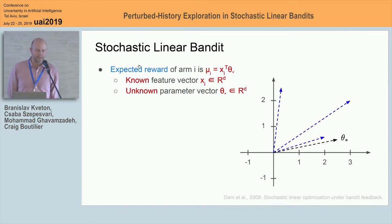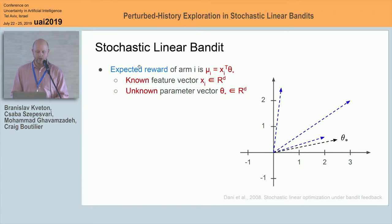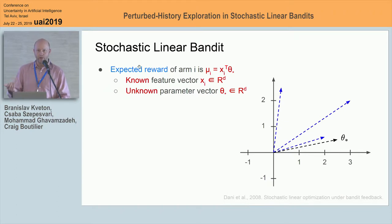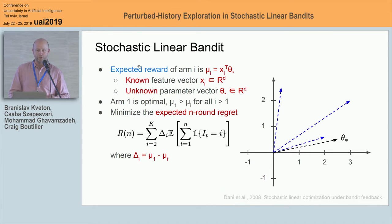A linear bandit is arguably the simplest structured bandit problem. It's a multi-armed bandit where the expected reward of arm I is a dot product of a known feature vector of this arm, X sub I, and an unknown parameter vector, theta star. A good way of thinking about these feature vectors and parameter vectors is that they live in some D-dimensional space — I'm showing a two-dimensional space here on the slide. The feature vectors are blue, the parameter vector is black, and the arm with the highest expected reward is simply the one whose feature vector has the highest dot product with the parameter vector.